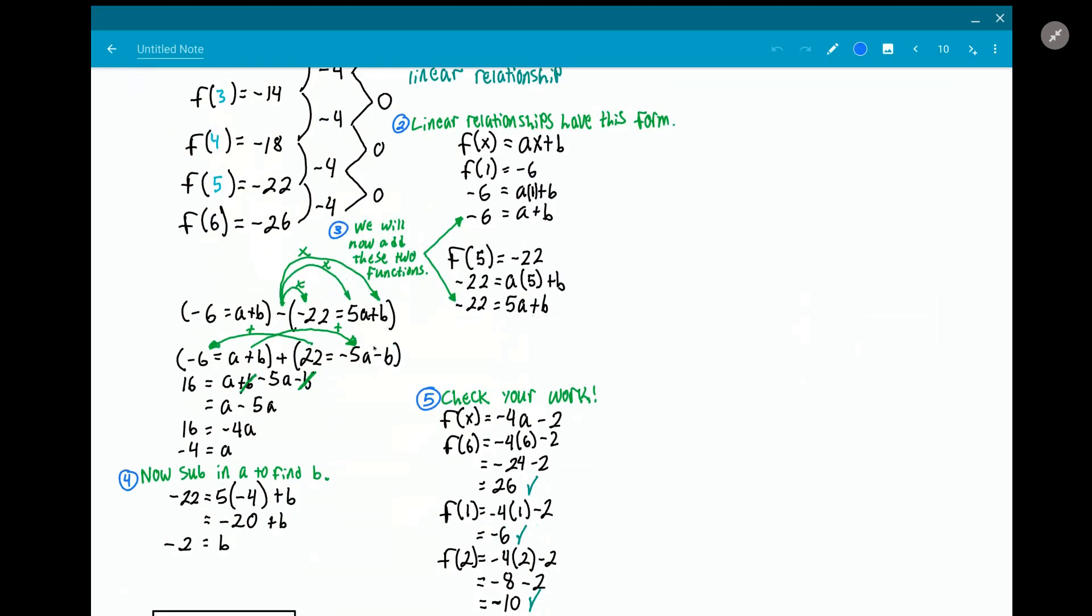So that way whenever I added this 22 to this -6, I got 16. And whenever I added this side, this function here, this term to this term, I got a + b - 5a - b. But then the b's canceled out so I was left with a - 5a = 16.